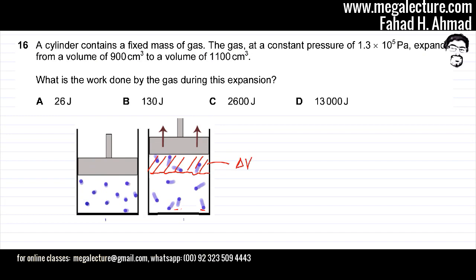This is the change in volume. The gas expands from an initial volume of 900 cm³ to a final volume of 1100 cm³, so delta V equals 200 cm³.